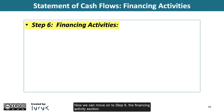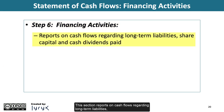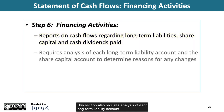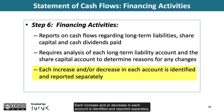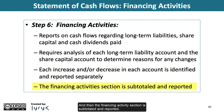Now we move on to Step 6: the financing activities section. This section reports on cash flows regarding long-term liabilities, share capital, and cash dividends paid. This section also requires analysis of each long-term liability account and the share capital account to determine reasons for any changes, just like the investing section. Each increase or decrease is identified and reported separately, then the financing activities section is subtotaled and reported.